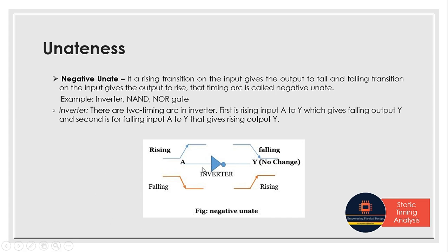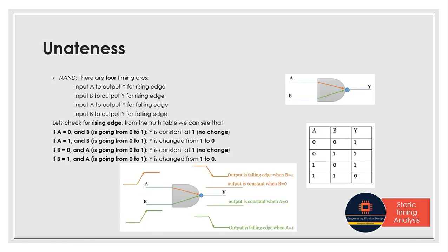For the inverter with input A and output Y, there are two timing arcs. When we give a rising edge at the input, the inverter inverts the value so we get a falling output. When we give a falling edge at the input, we get a rising output. For the NAND gate with two inputs, we get four timing arcs — each input is checked for rising and falling edges.